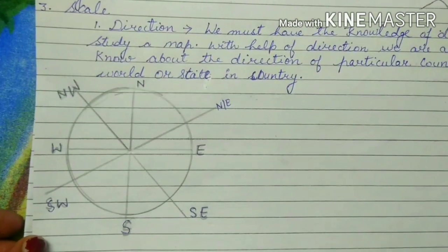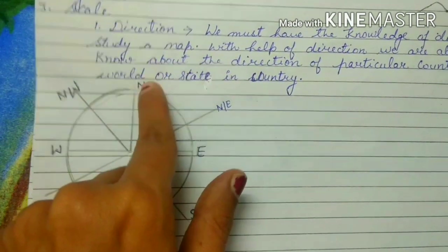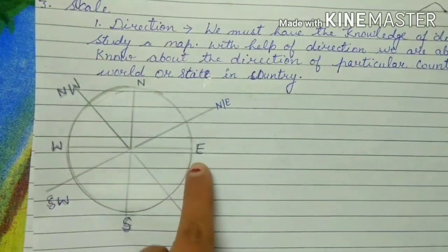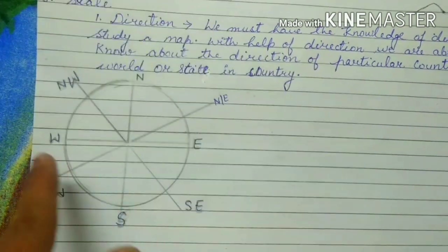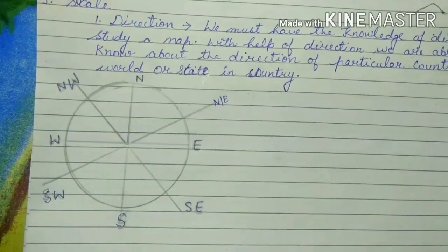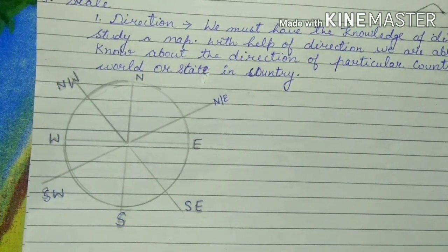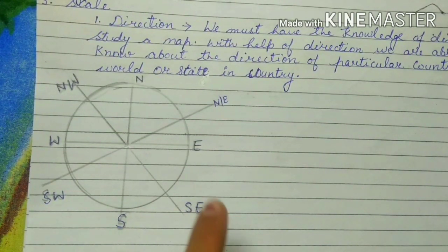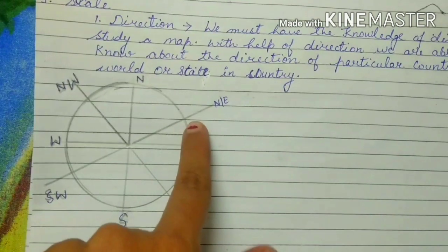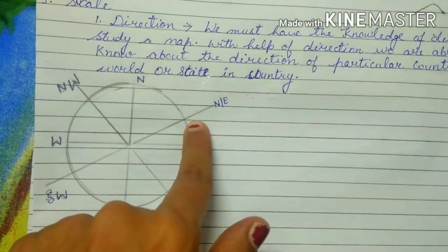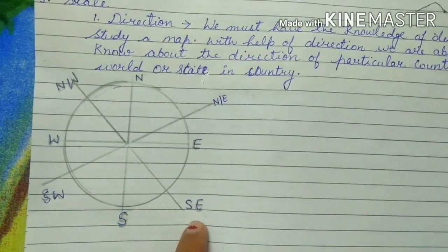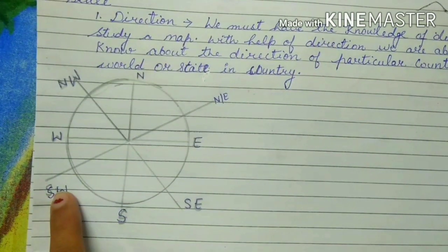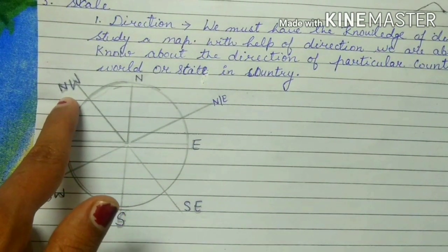You all know that there are four main directions: north, east, south, and west. In addition to these four main directions, there are also sub-directions — north-east, south-east, south-west, and north-west.